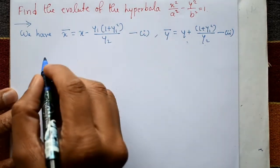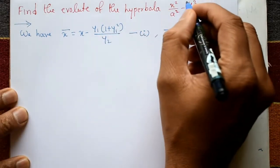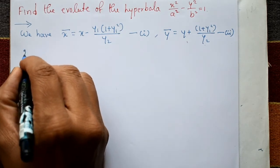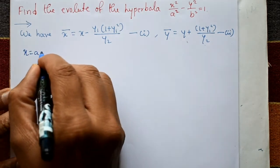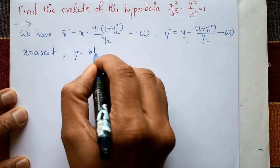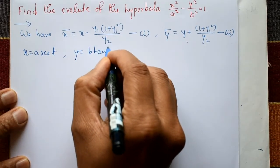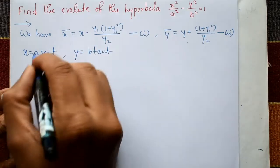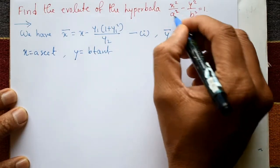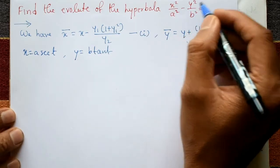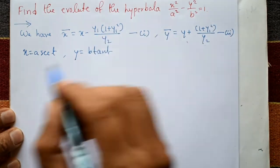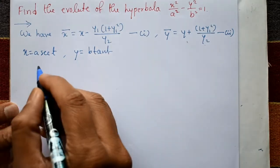For the parametric equation of the hyperbola, x = a·sec(t) and y = b·tan(t). This parametric equation corresponds to the Cartesian form of the hyperbola equation. We need y1 and y2 from both equations, where x and y are now given parametrically.